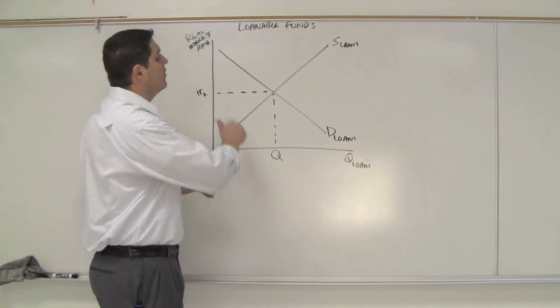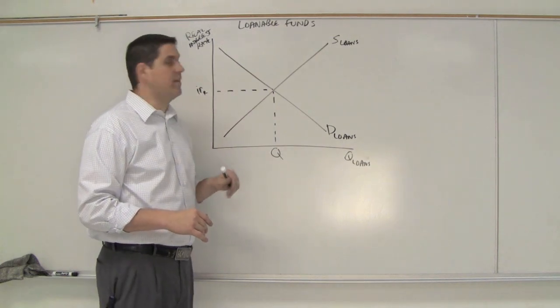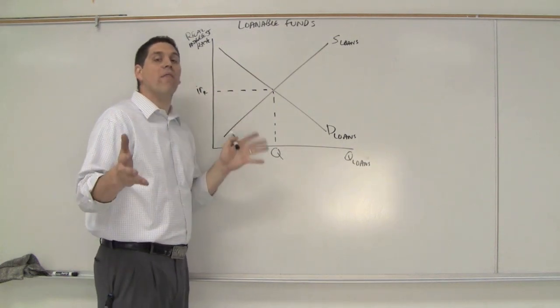Here's the idea. The demand and supply for loans determines the real interest rate. Let's talk about why the graph looks the way it does.